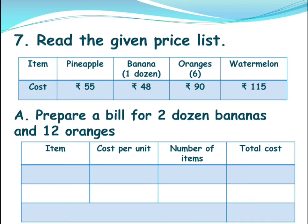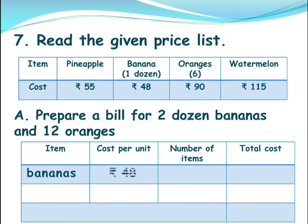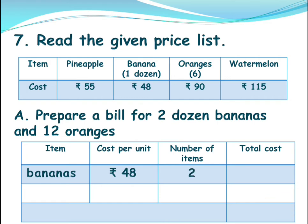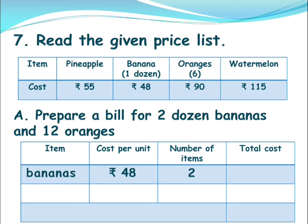Now if you see the question, prepare a bill for two dozen bananas. So the item is banana. For banana, one item is one dozen. Cost per dozen is 48 rupees, so you write 48 rupees. You are taking two dozens, so the number of items is two. So 48 into two — for two units you need to add 48 two times, or multiply by two. So the total cost you will get is 96 rupees for the two dozen bananas.